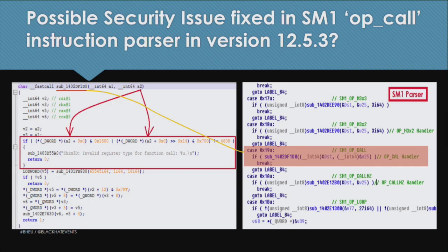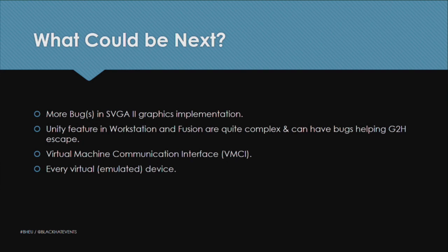We predict that in the future we may see more bugs in the SVGA components, including other shader assembly parsers and the SVGA 2 implementation. The Unity feature — a very complex VMware Workstation feature — may also contain bugs allowing guest-to-host escapes. Additionally, every emulated device inside the guest OS can be susceptible to guest-to-host escape attacks, including network cards, sound devices, and others.